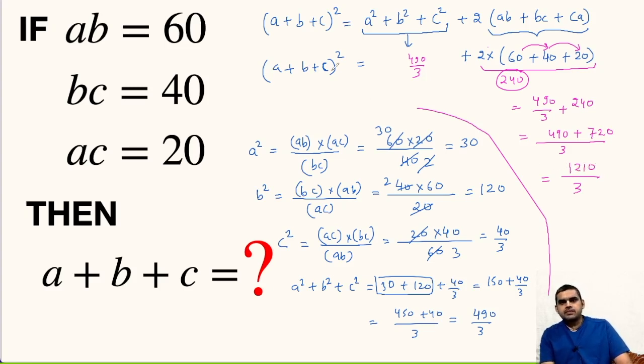A plus B plus C whole squared is 1210 upon 3. So A plus B plus C will be square root of 1210 upon 3.